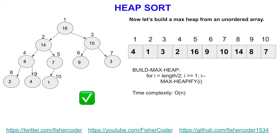The time complexity of build max heap is O(n). It's not O(n log n) because the actual heapify cost is not O(log n) for all elements — it depends on how far each element moves down the tree. In other words, it depends on the height of the element in the heap. The detailed mathematical analysis is beyond the scope of this video, but the time complexity of building a valid heap is O(n).